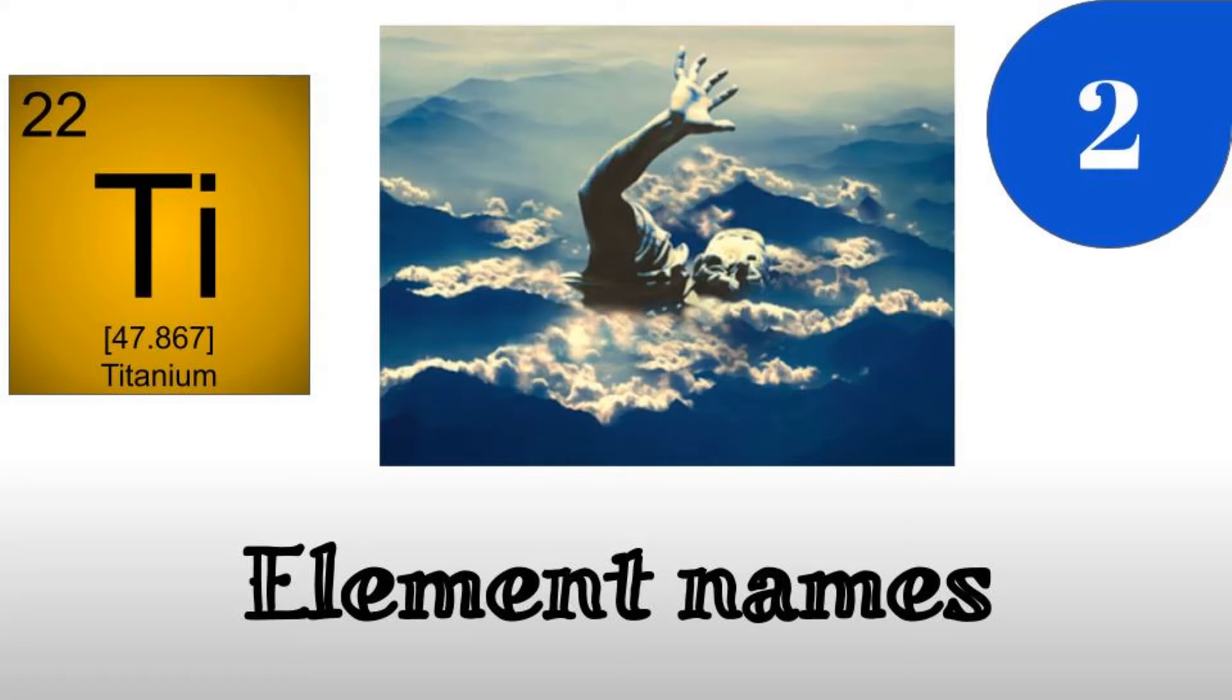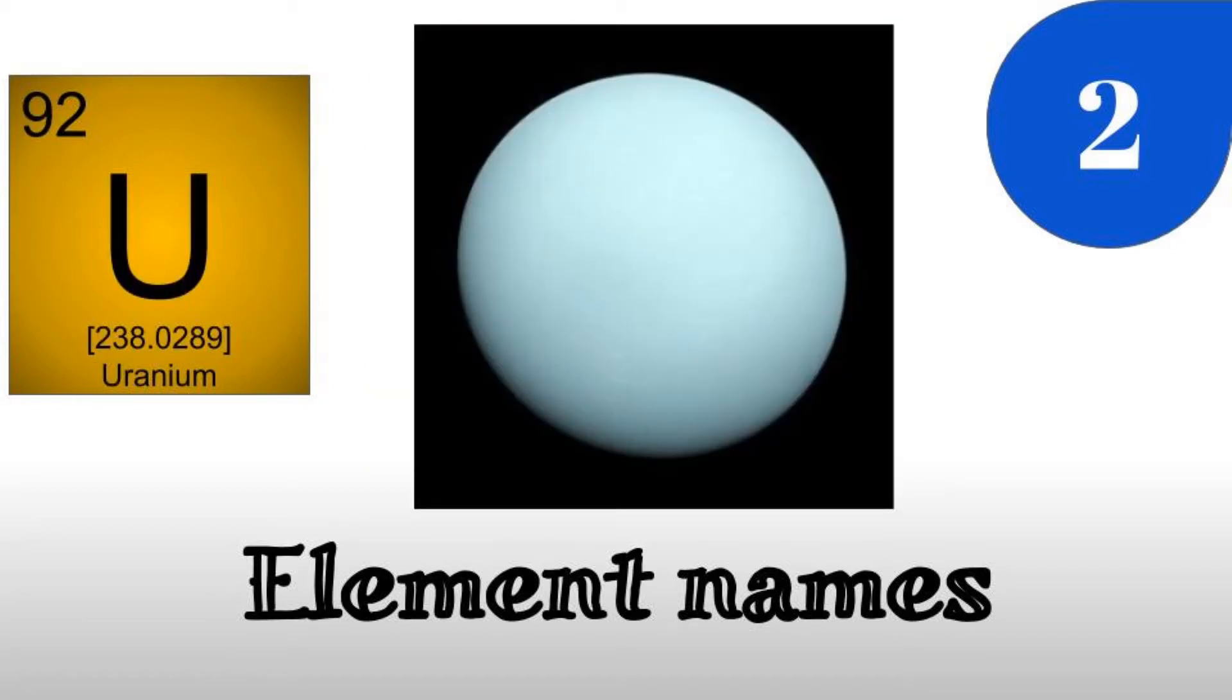Another example is being named after an astronomical object, like Uranium was. When Uranium was discovered, Uranus the planet was discovered at a similar time. This is where the name of Uranium comes from.